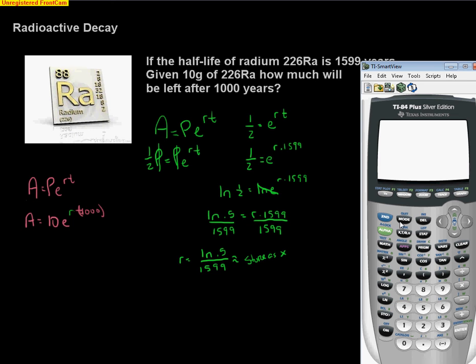Now the calculator knows that x is the negative four point three whatever times 10 to the negative fourth. I stored the whole rate and didn't cut off any significant digits. So now I could just plug in 10 times e to the x, there's that rate, times a thousand.